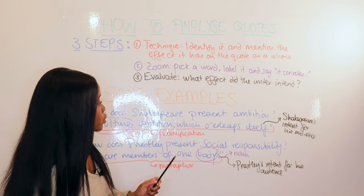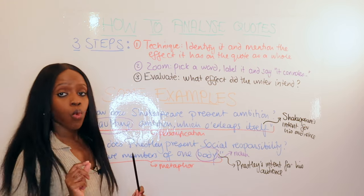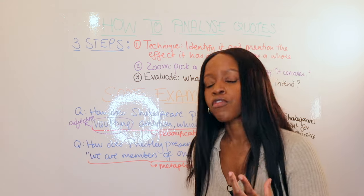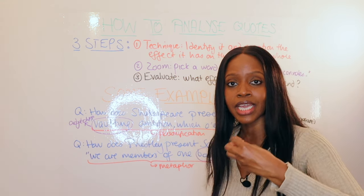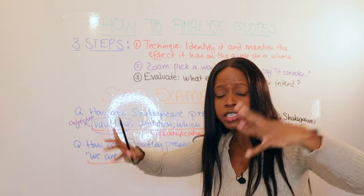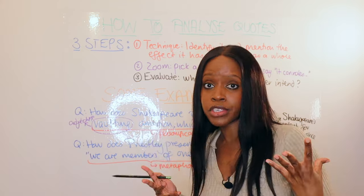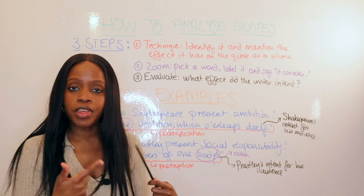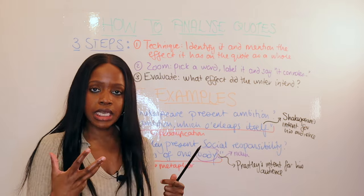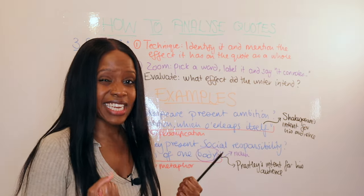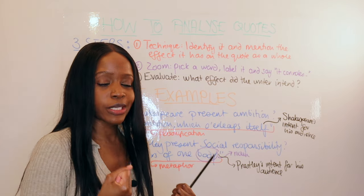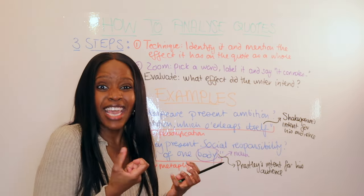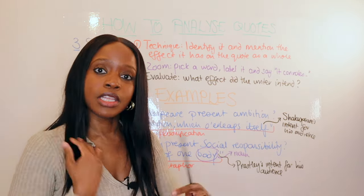That's step one, but I don't stop there. I zoom in and pick the adjective 'vaulting,' which describes ambition — this is really powerful as it connotes how this ambition is way too vast and great for Macbeth to handle. Then for step three, I mention Shakespeare's intent: perhaps Shakespeare wants to illustrate how ambition can be a frightening thing to hold, and maybe he intends his audience to think it's not a great idea to be ambitious, because if you get what you want, you may not be able to handle the power that comes with it.